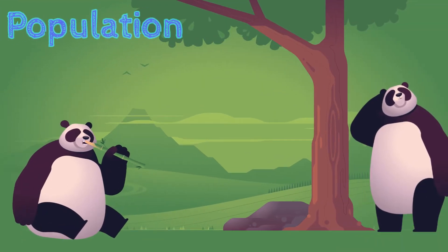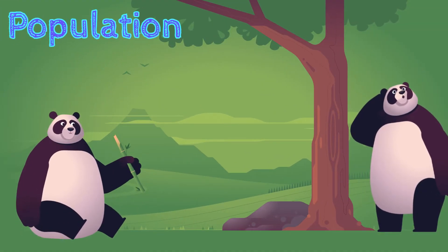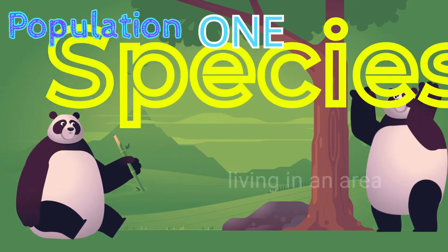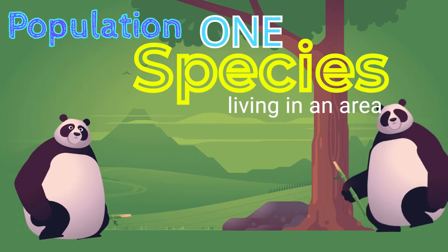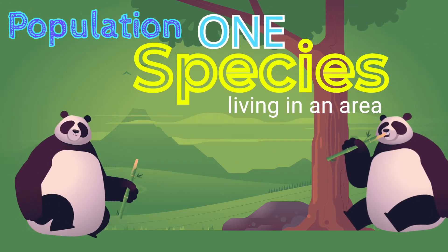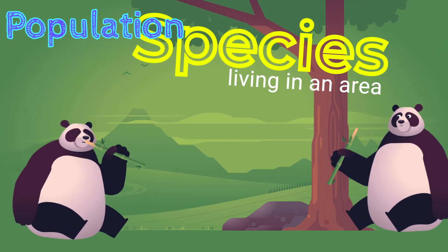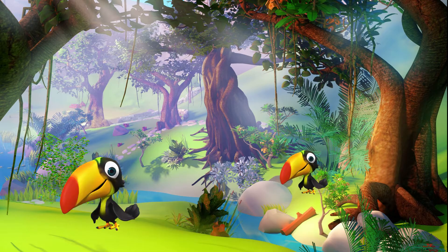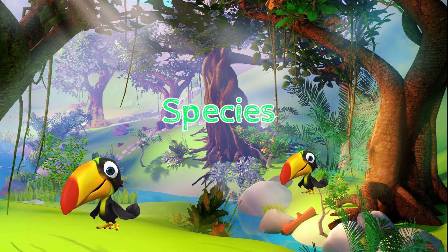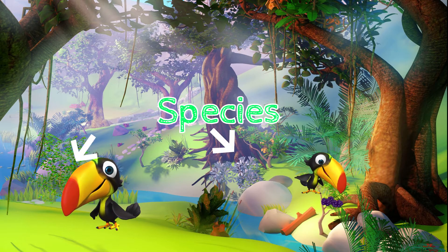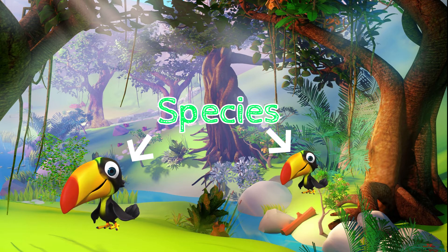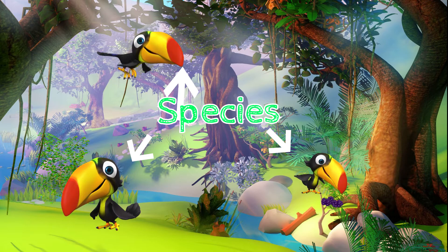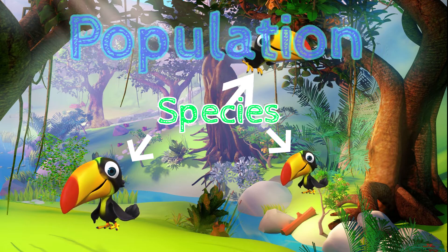Biologists use the term population to define all members of one species living in an area. For example, the toucan is a species of bird that is most populous in the Amazon. This is an example of a population.